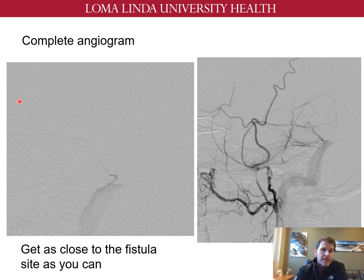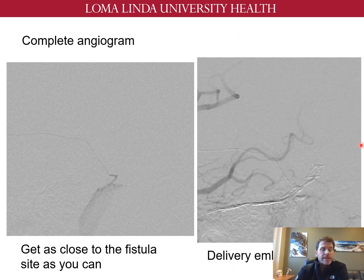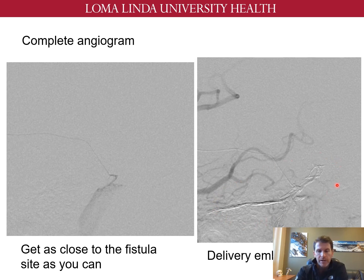The last step is to deliver the embolic material, which can be NBCA glue, Onyx type material, or even coils, especially in transvenous approaches. The main tip here is to be patient with your embolization material, as this approach usually leads to complete obliteration of the fistula. Here you can see Onyx that we used in this fistula to completely obliterate it.